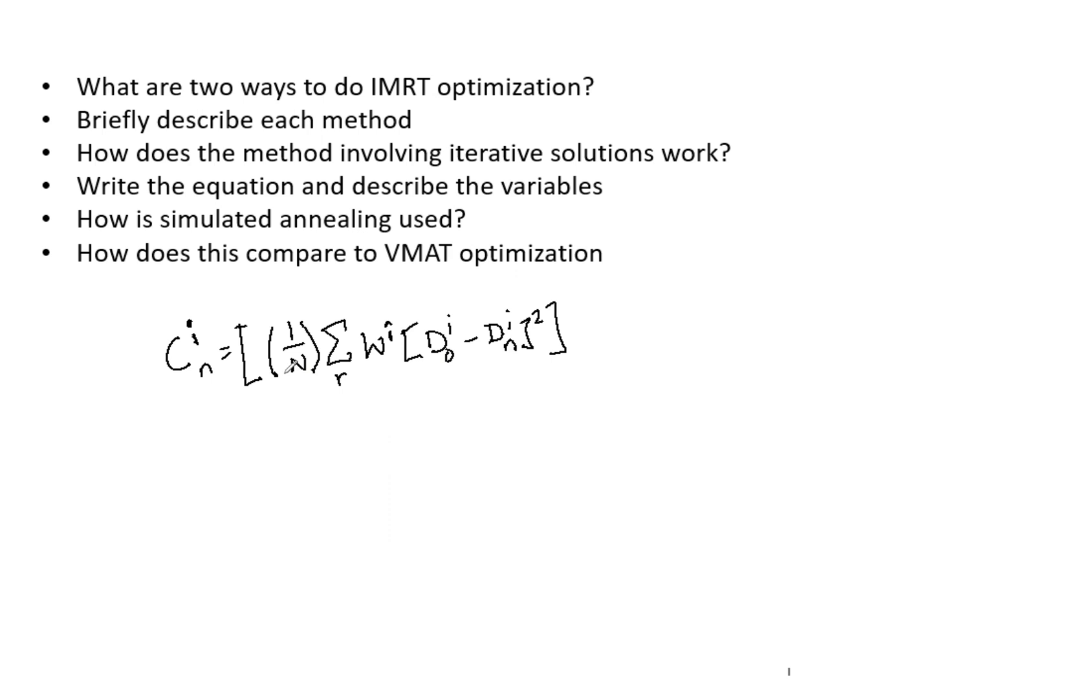And what ultimately happens is the algorithm adjusts this dn value. So remember, this is the computed dose. So it adjusts the computed dose values to minimize the overall cost function, which is the sum of cost from the target volumes and the OARs. So ultimately you want the overall cost function, which is the sum of all the cost functions of all the structures and all the organs, to be as small as possible.